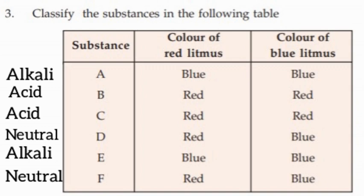Classify the substances in the following table. Substance B: red litmus paper stays red, blue litmus paper turns red — that means it is acid. Substance C: red litmus paper red, blue litmus paper red — the substance is acid. Substance D: red litmus paper red, blue litmus paper blue — that is neutral. Substance E: red litmus paper turns blue, blue litmus paper is blue — that is alkaline. Substance F: red litmus paper red, blue litmus paper blue — that is neutral.